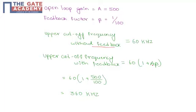A is the open loop gain value and β is the feedback factor. Substituting all these values: 60 times (1 plus 500/100). By simplifying this we will get 360 kHz.